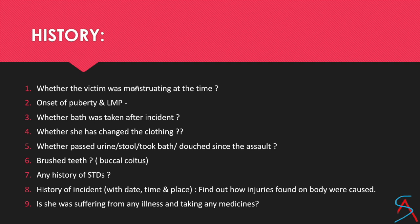You have to ask whether the person was menstruating at the time of the act, because if she was menstruating, the semen may flow out. Ask about the LMP, whether the person is pregnant or not, or if there is any other problem. Ask about the history of bathing after the incident, because minor evidence may wash away. Also ask whether she changed clothes, as clothing can provide a lot of information.